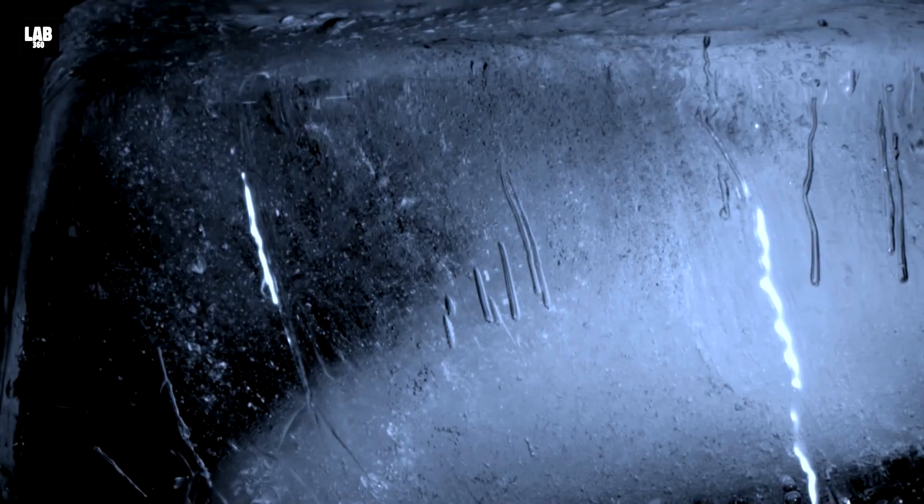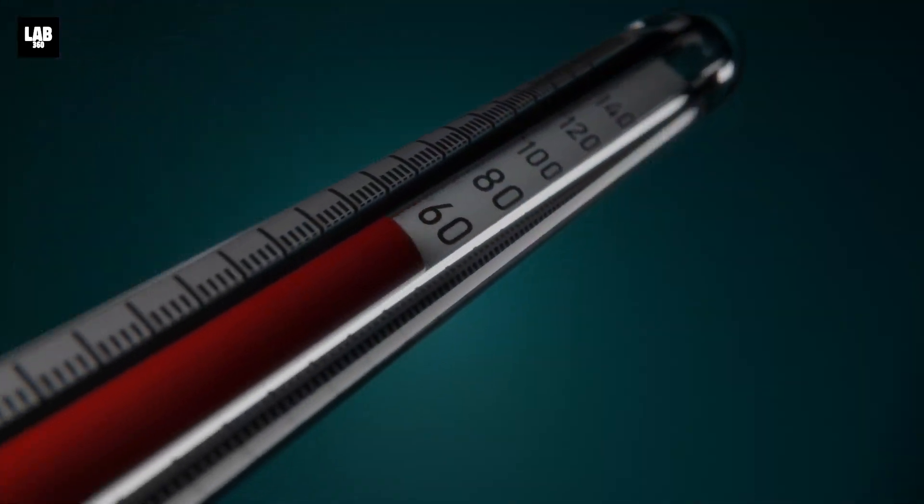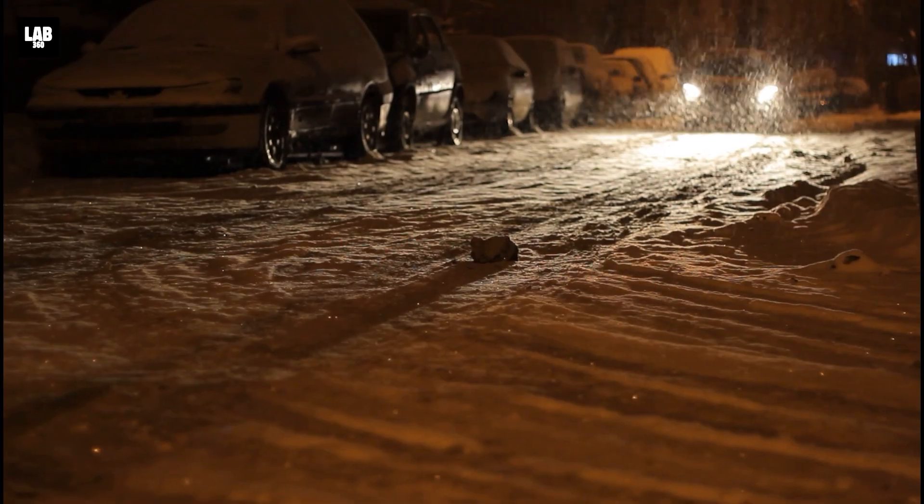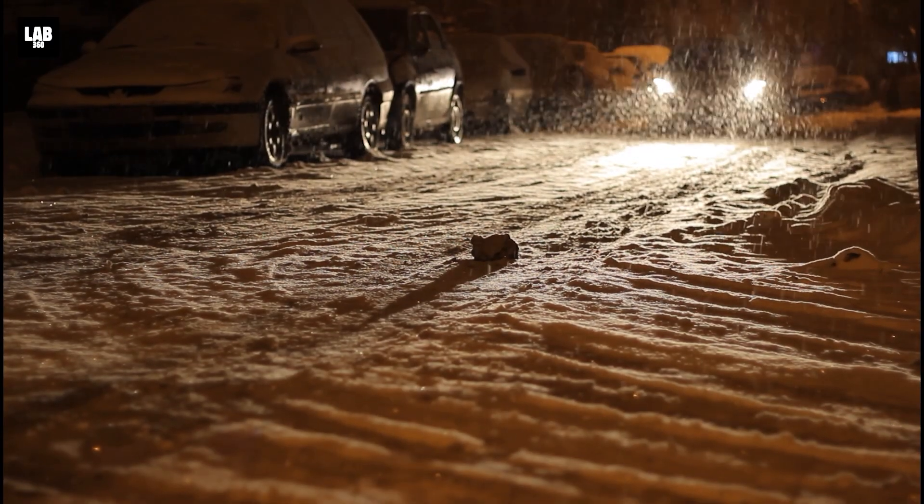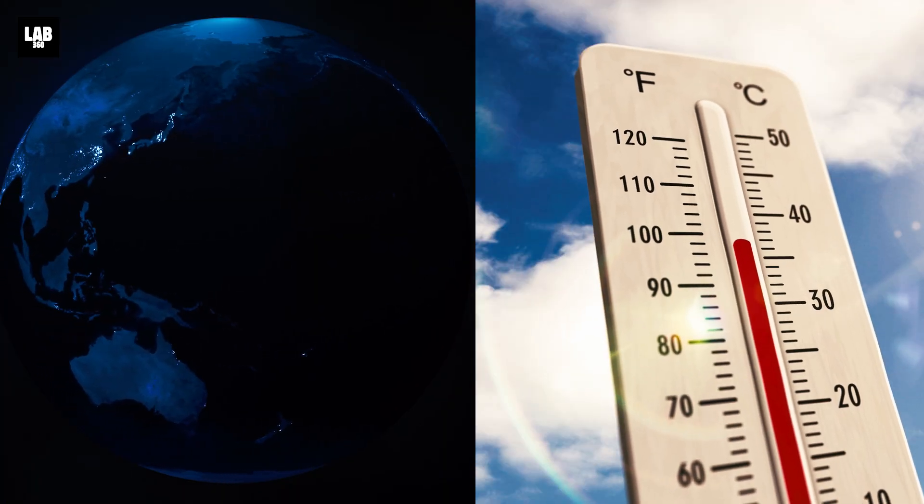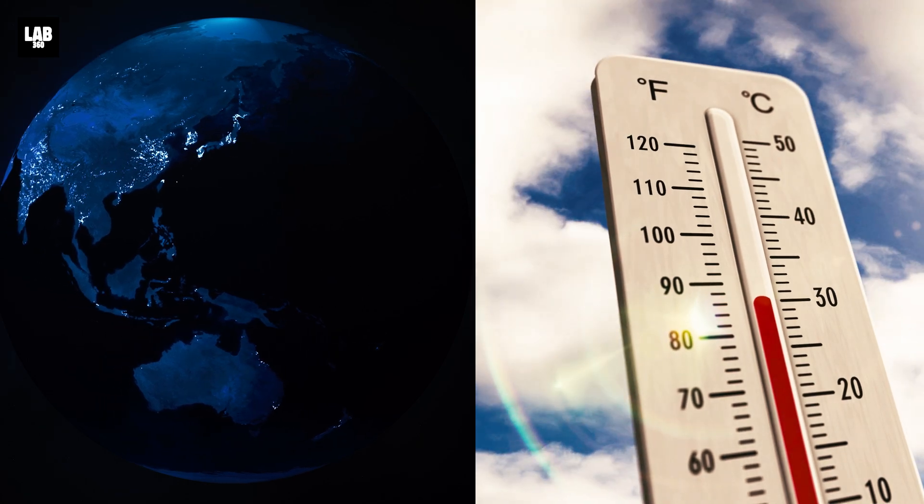Without the sun's heat, Earth would become an icebox. Within hours, the temperature would start to drop. On the first day, we'd lose around 20 degrees Fahrenheit. Within a week, the average temperature would plunge below freezing, and within a year, Earth's surface could reach minus 100 degrees Fahrenheit.